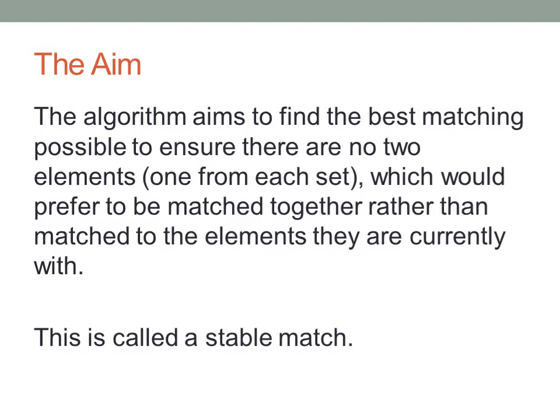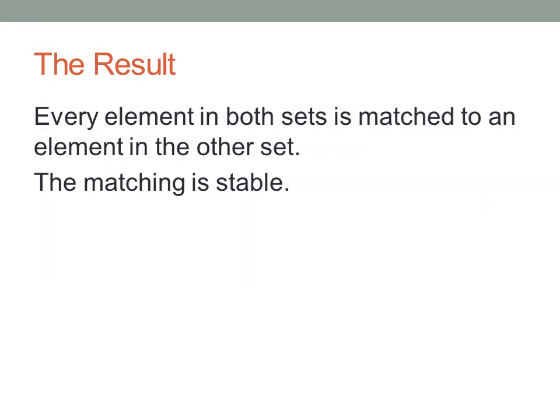Continuing with the previous example, there would be no child who would prefer to go to a different school and that school also preferred to admit the child. If there are no cases of this, it is a stable match. Using this algorithm ensures that every element in each set is matched to an element in the other and that the matching is stable, so no child would be without a school and no school would be less a child.